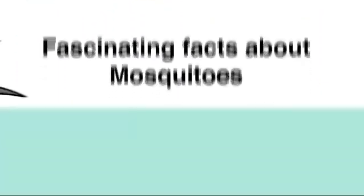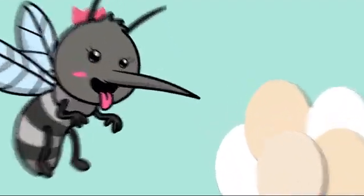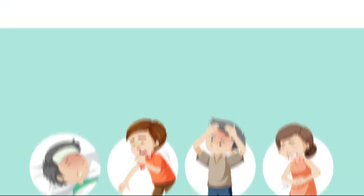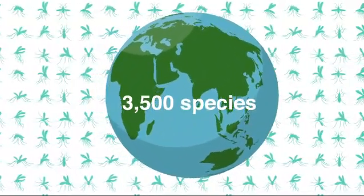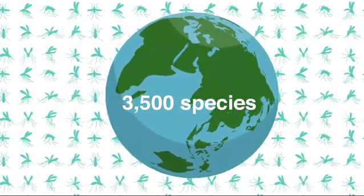Fascinating facts about mosquitoes. Only female mosquitoes bite, as they need blood to nourish their eggs. Mosquitoes are among the deadliest creatures on earth, transmitting diseases like malaria and dengue fever. There are over 3,500 species of mosquitoes worldwide, but only a few of them bite humans.